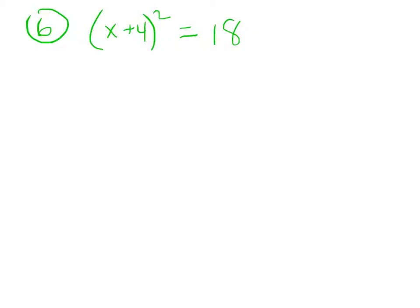So I have an equation that looks like some stuff squared equals 18, and so to undo that squaring, I'm just going to square root both sides.